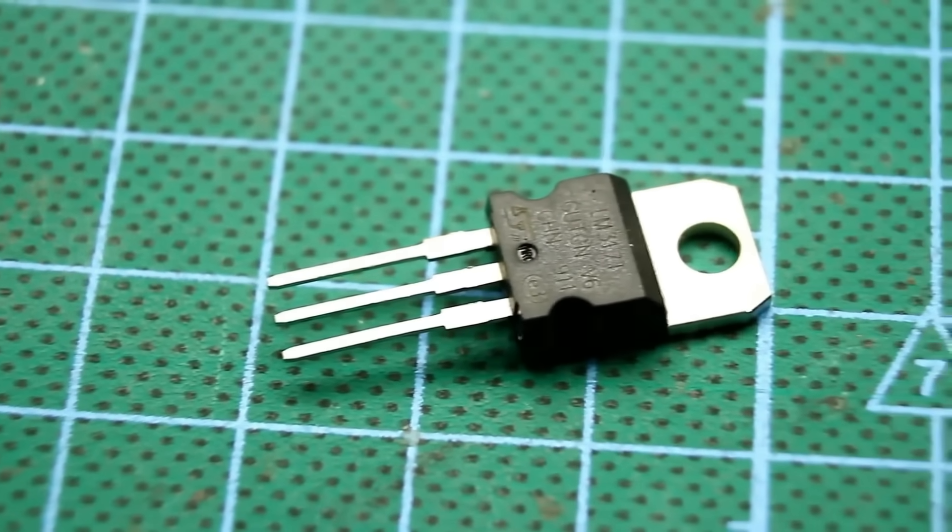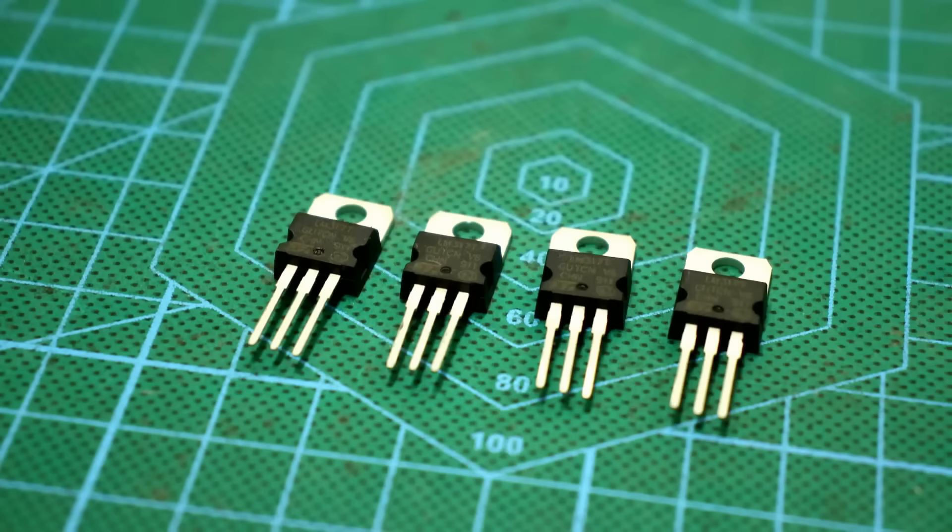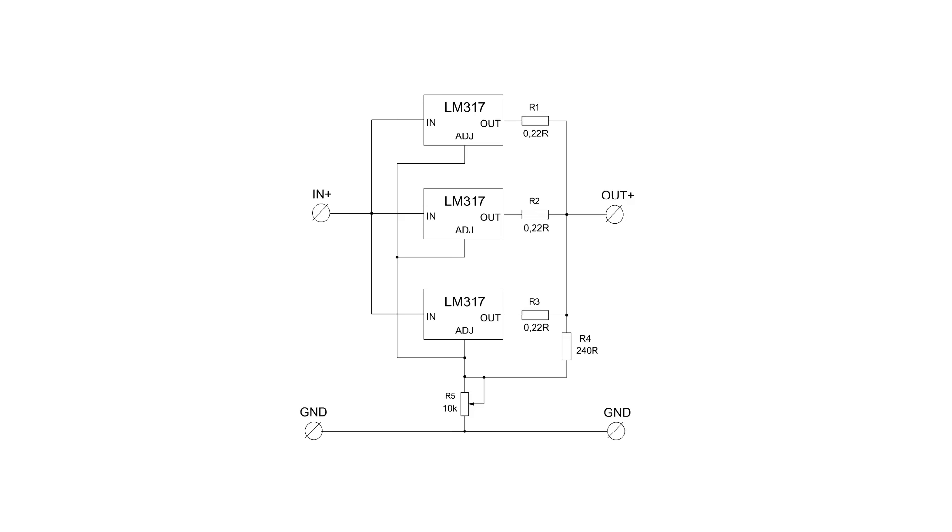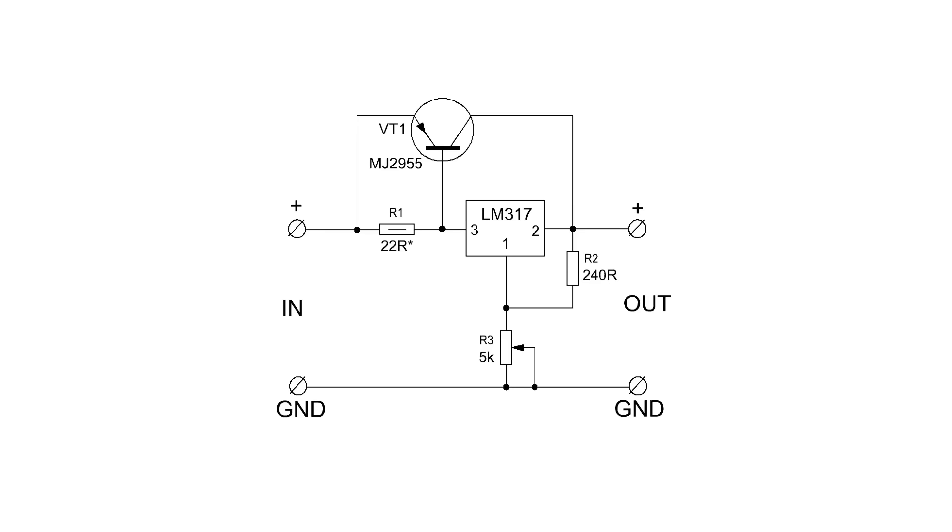There are at least two options for increasing the output current of the chip: parallel connection of several chips, or the introduction of an additional power transistor.